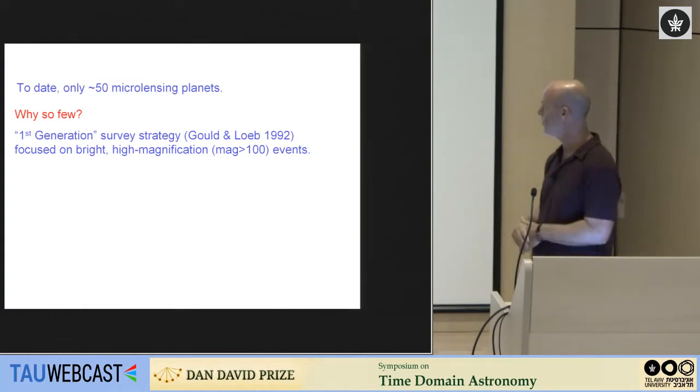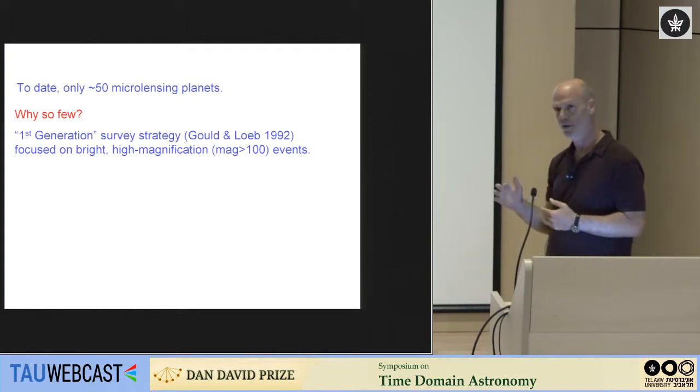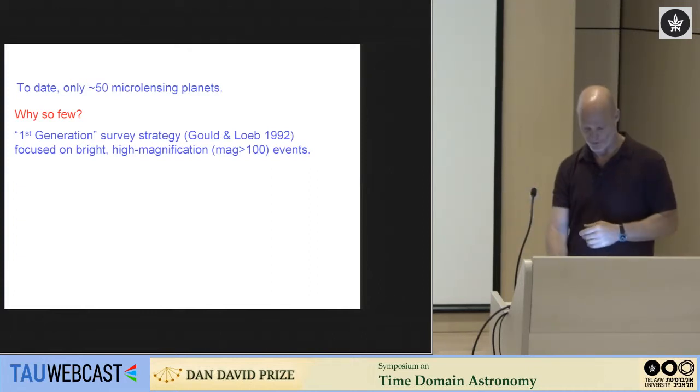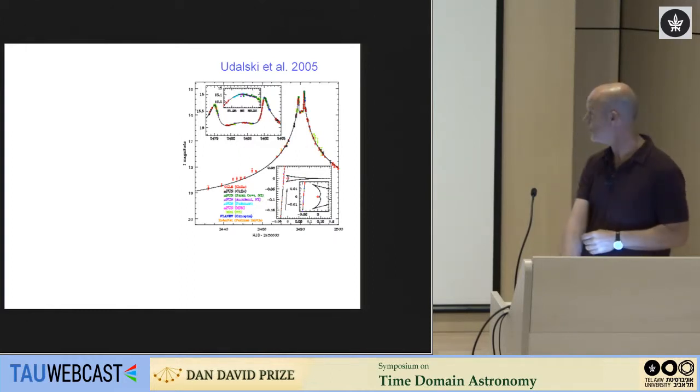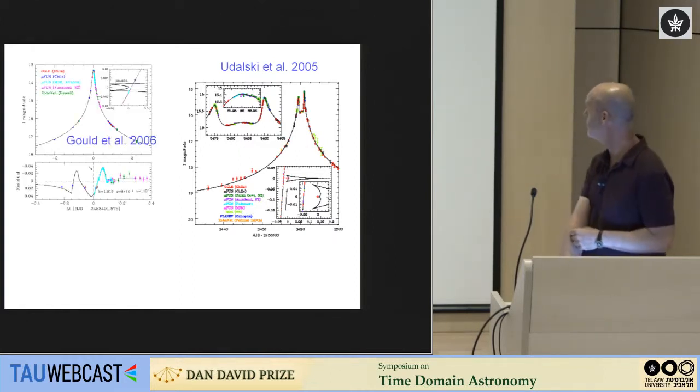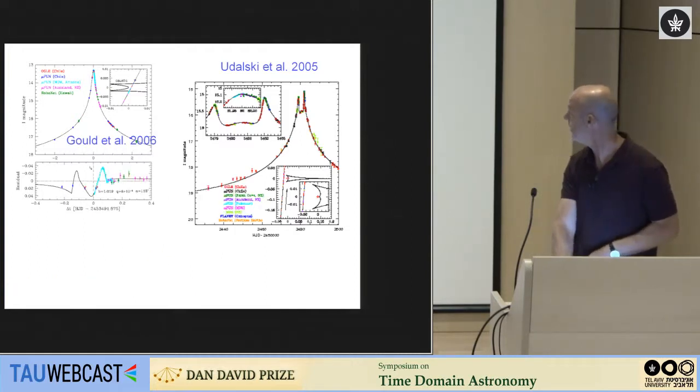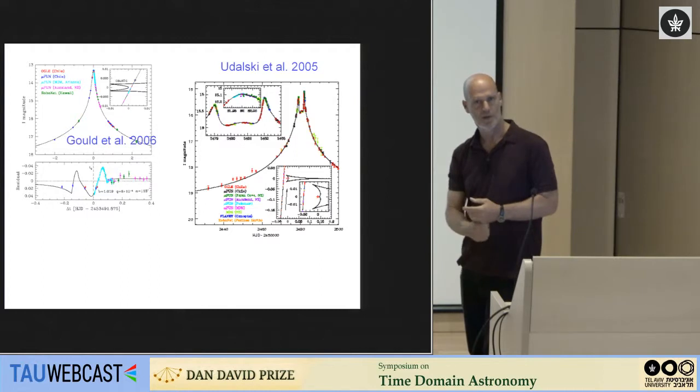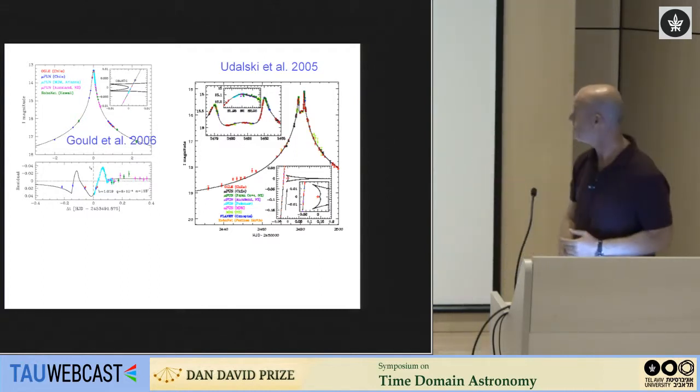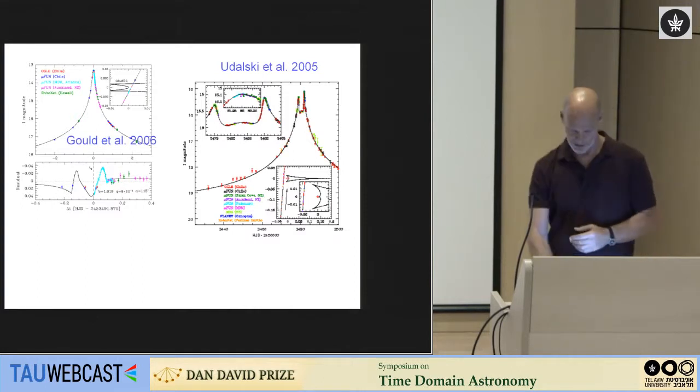This was the first planetary system discovered by microlensing in 2008. It's a Jupiter-like and a Saturn-like planet around again a lower mass star, an M star. And a few years ago, the second two-planet system was discovered, so again you see now the light curve is even more complicated because of the more complex caustic structure. So today there's only about 50 microlensing planets that have been discovered, including the ones that I will mention today. And the question arises, why so few, especially compared to the thousands that have been found by other techniques?